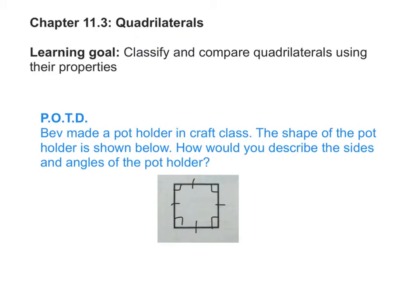Our learning goal for today is to be able to classify and compare quadrilaterals using their properties. What does the word classify mean? Joseph? To organize or sort something based on their properties. So today you will have succeeded if you're able to classify or sort quadrilaterals and also compare them based on their properties.